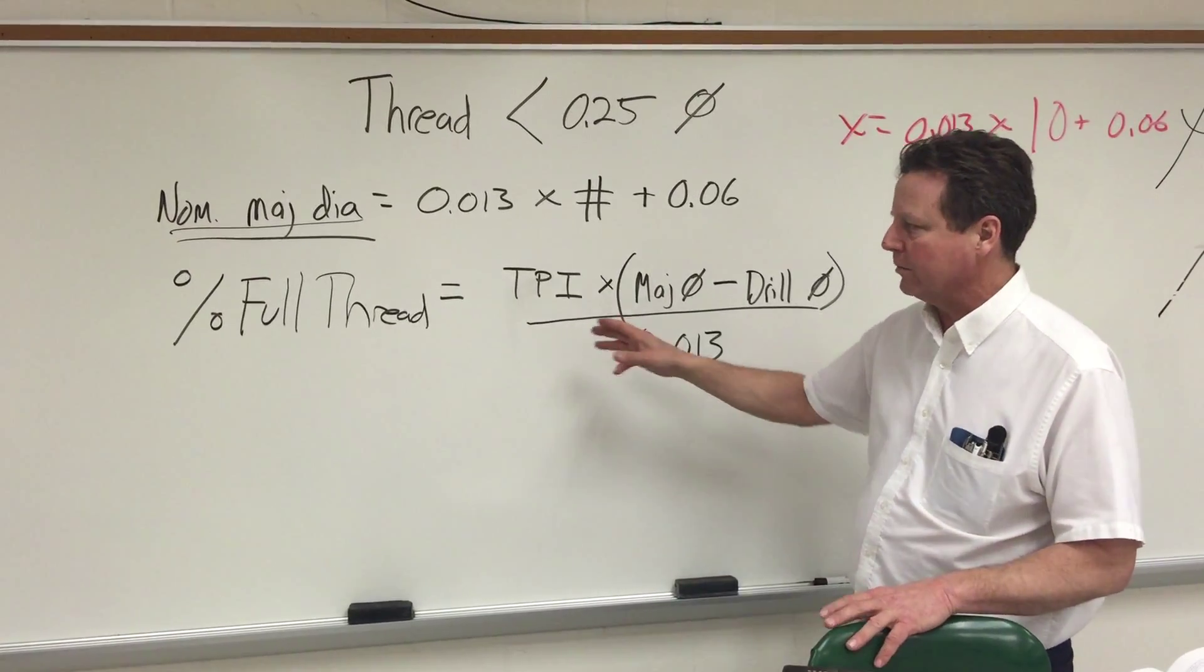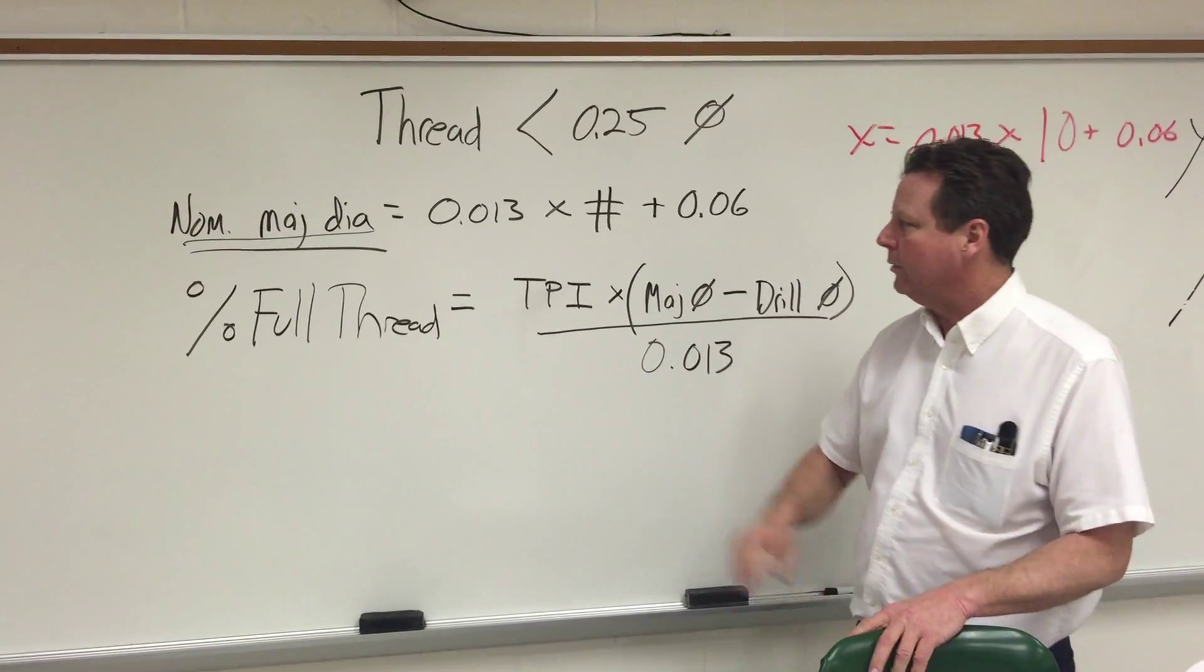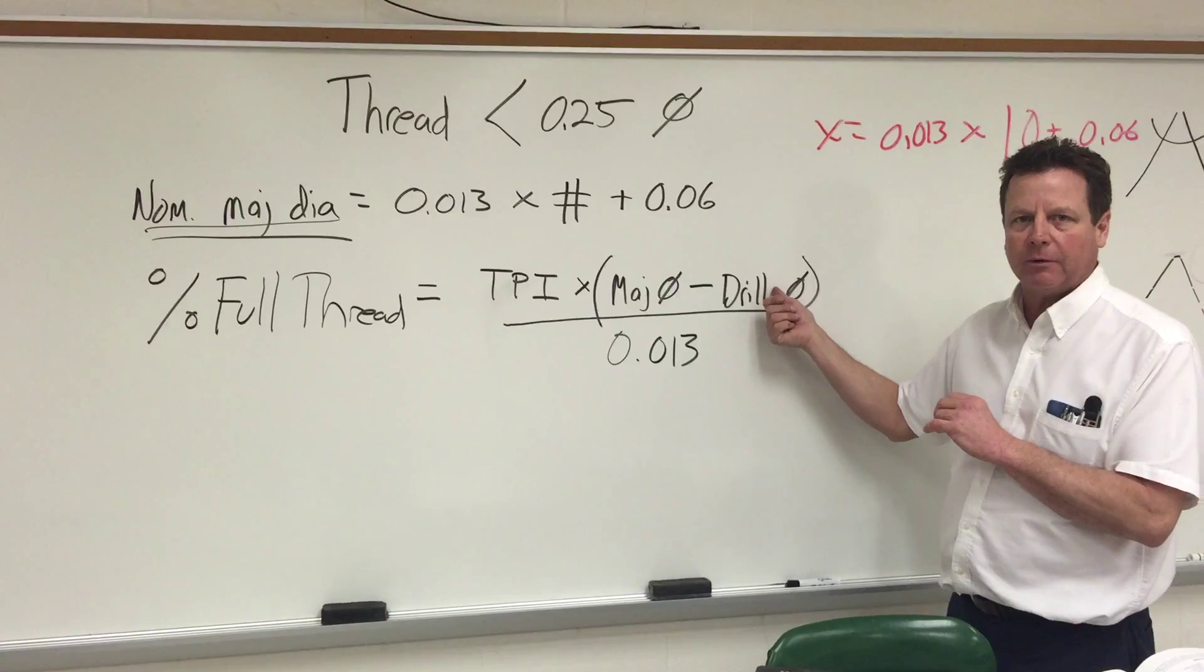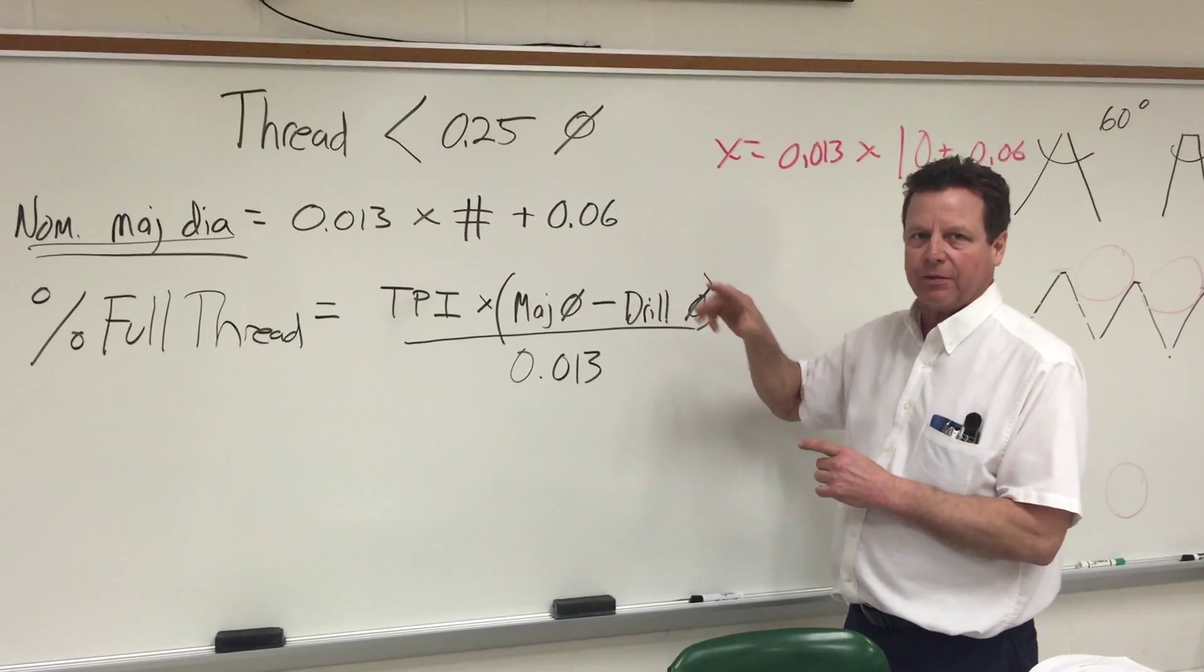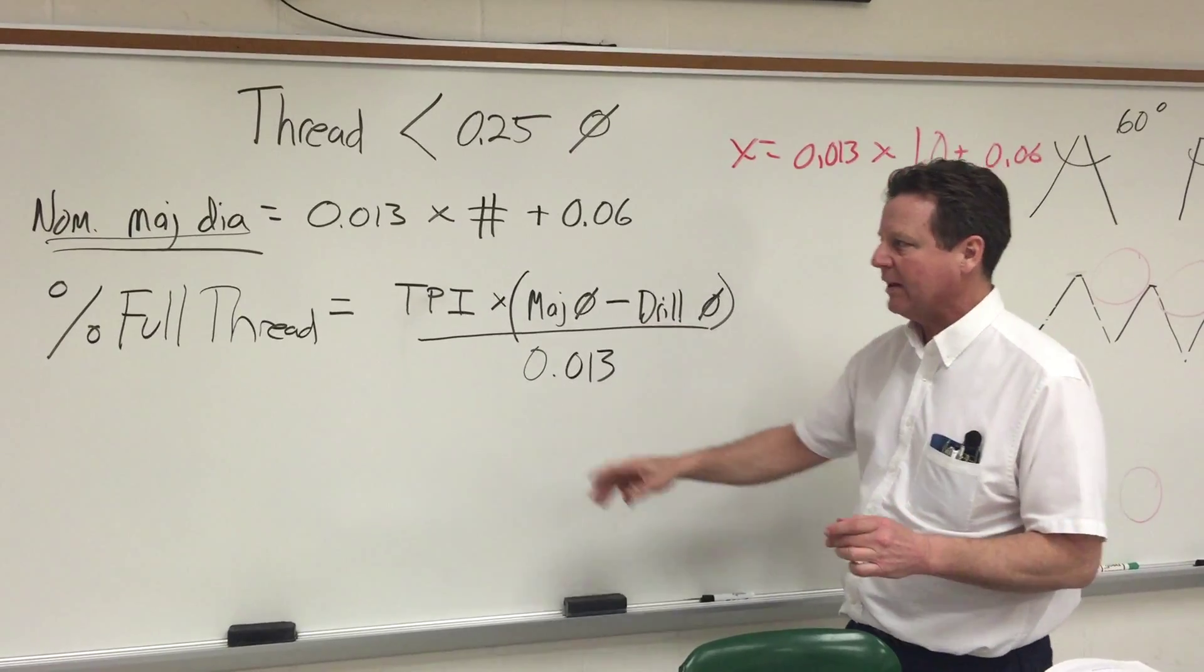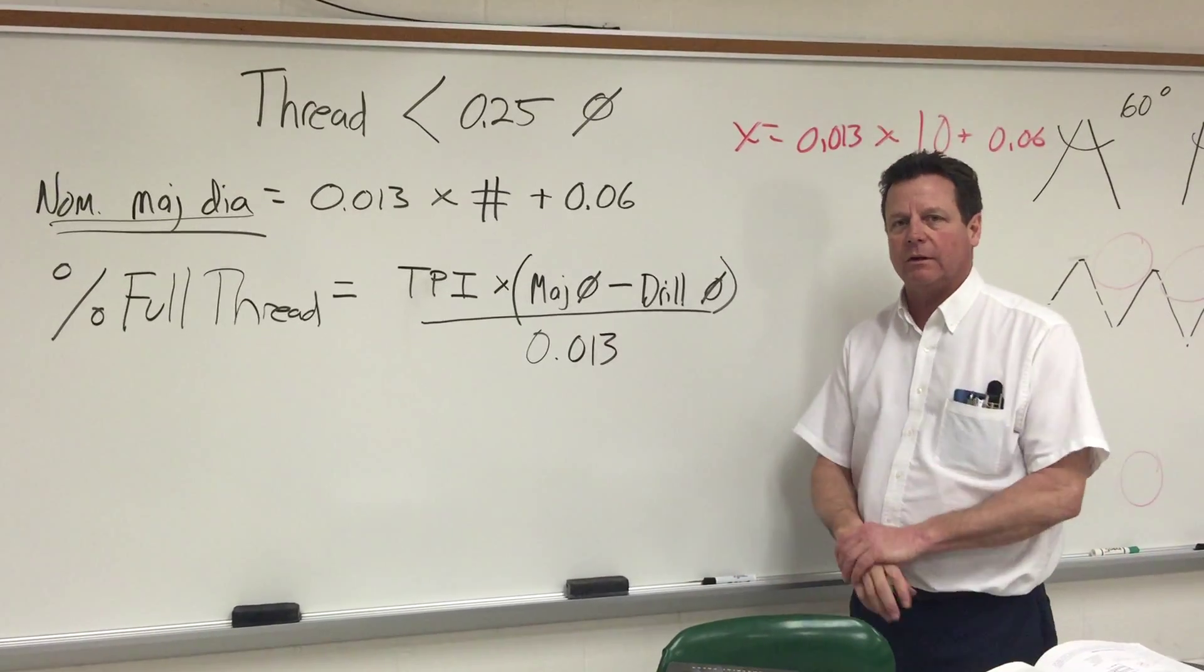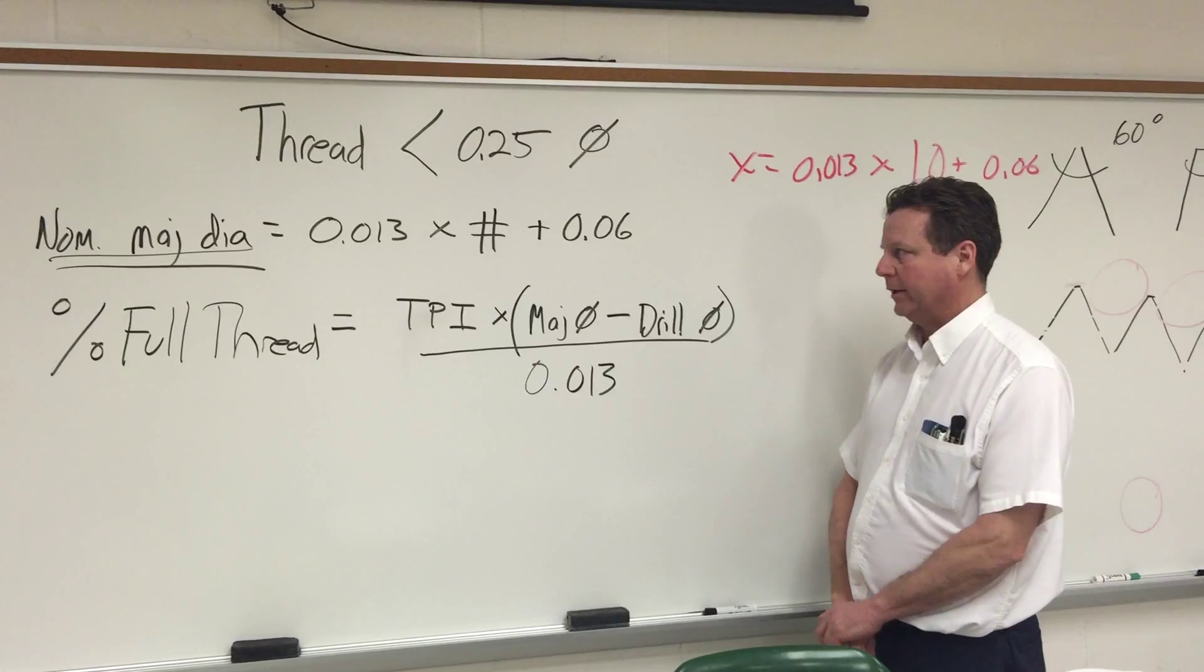When you want to know the percent of full thread engagement between a nut and a bolt, you have to know the major diameter of the bolt and also the drill diameter of the hole size, because that will tell you how much of the thread is left. 75% is what we normally aim for, but this formula will give you the exact percentage of full thread.